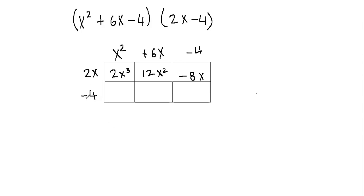Now I'll multiply the second row by all the columns. So I'll multiply negative 4 with x squared first. So negative 4 times x squared would be negative 4x squared.